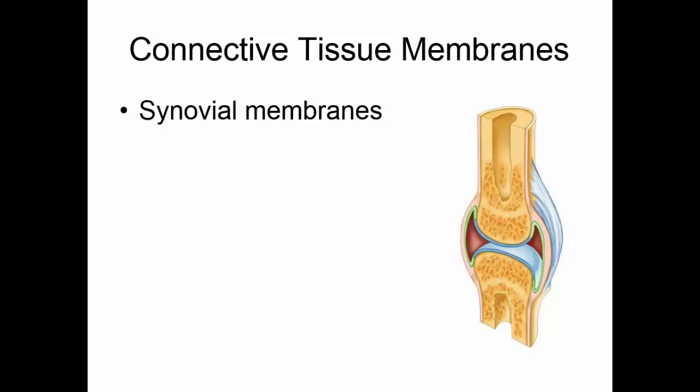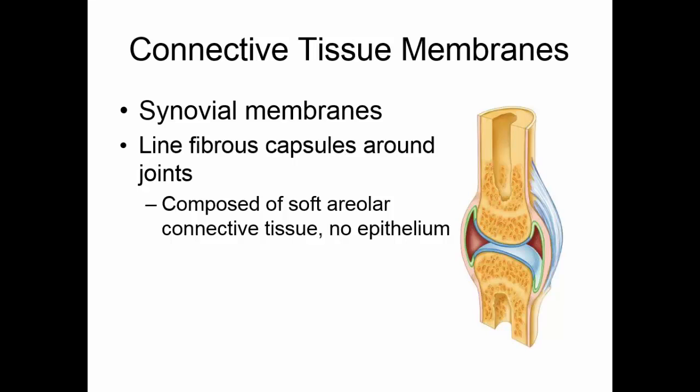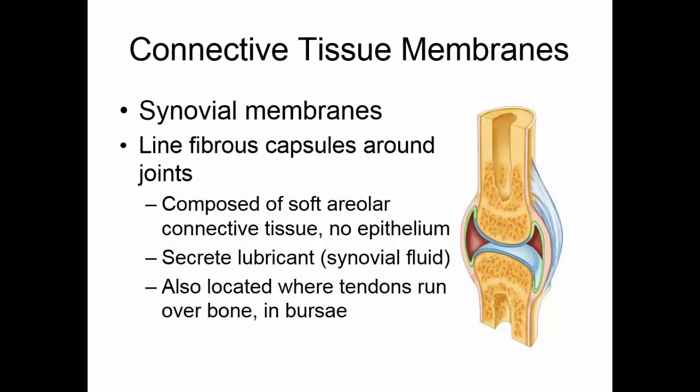The connective tissue membranes are the synovial membranes. These membranes line the fibrous capsules that are around the movable joints. They're composed of soft areolar connective tissue — there is no epithelial tissue involved in a connective tissue membrane. The synovial membranes can also secrete a lubricant known as synovial fluid, which makes the joints move more easily. Connective tissue membranes can also wrap around tendons and form little sacs called bursa that act like ball bearings around the joints.